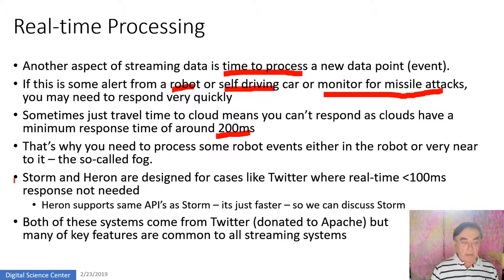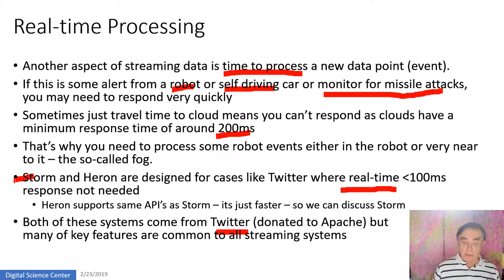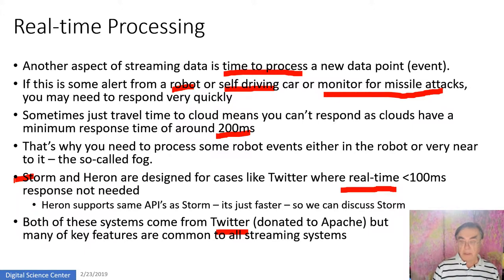Storm and Heron are designed for the case where they're running on the cloud, not locally on your tweeting phone, and they're trying to get results back in a few hundred milliseconds. They all come from Twitter but are much more generally applicable. Their capabilities are now well understood because Twitter open-sourced both Storm and Heron, so we're able to look at how they're designed.